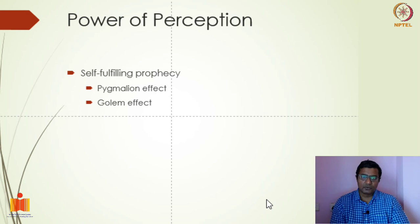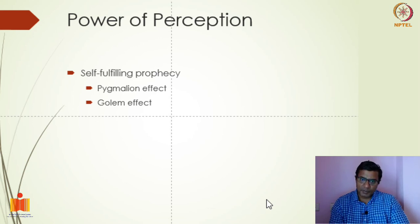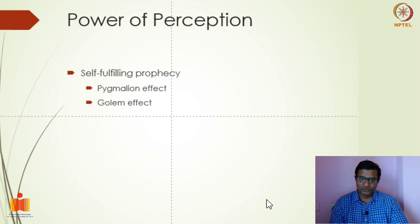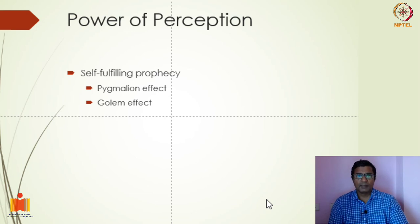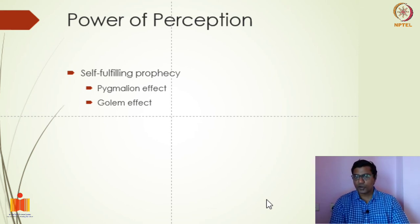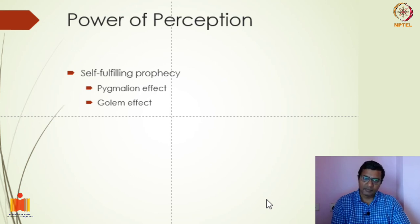The Golem effect is similar to the Pygmalion effect — when we set low standards to individuals or subordinates, those standards become the benchmark for employees. When you think employees are not going to work and you set them low standards, they also become low performers. Instead, if you set higher goals for your subordinates, they will perform better. It holds true for our own self also — when you set lower goals for yourself, you tend to perform even lower than that. If you set higher goals, it gives you confidence and you perform better.